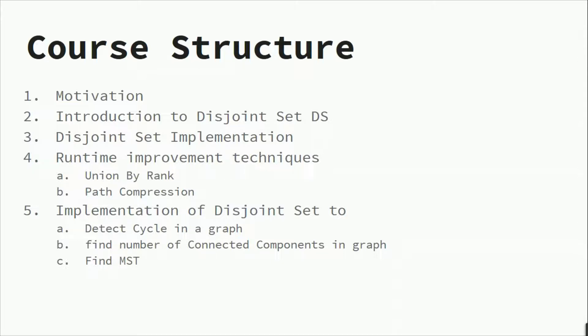In the third section, we will see what is the implementation—how we implement disjoint data sets. And then, since disjoint data sets themselves are not so fast, there are two different techniques which are used to make the runtime better. First one is known as union by rank and another is path compression. So we would have a look at these two techniques in detail.